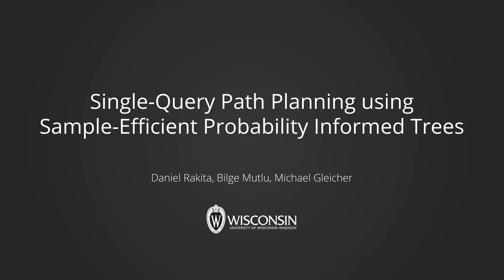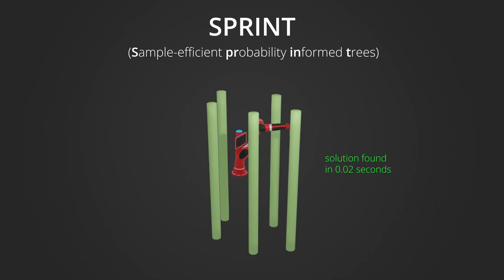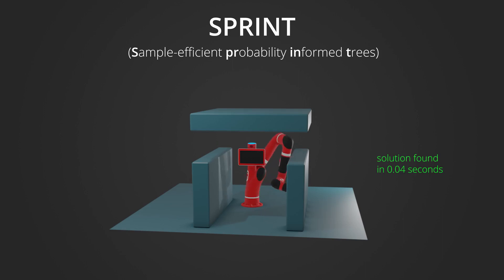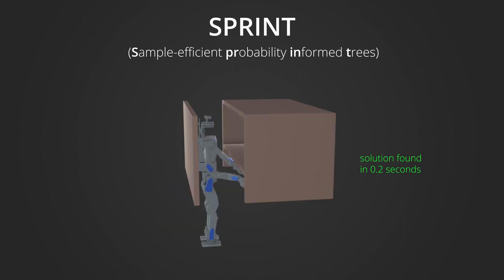Hi, I'm Daniel Rikida, and today I will be discussing work I did alongside my co-authors Bilge Mutlu and Michael Gleischer at the University of Wisconsin-Madison. In this paper, we present a new single-query sampling-based path planning method called SPRINT that can quickly solve high-dimensional path planning problems, such as for robot manipulator motion planning.